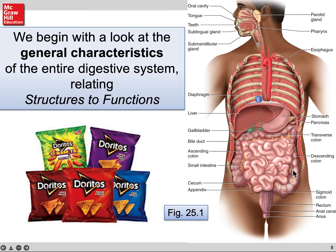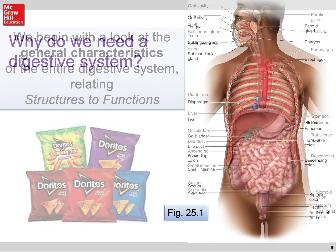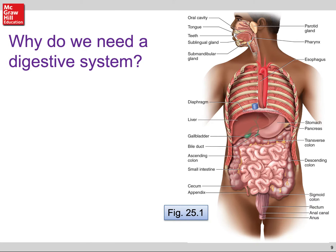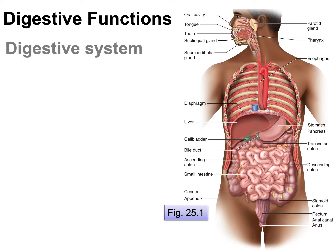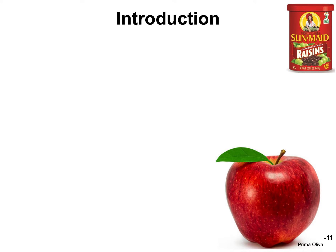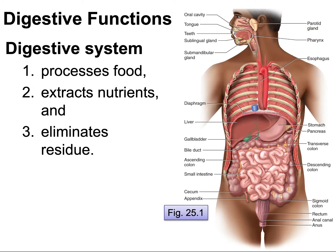Why do we have a digestive system? We've pretty much covered these functions: a digestive system processes food — it breaks it down mechanically and chemically. Then the good part: it extracts the nutrients. In some cases that's simple moisture; in other cases it's vitamins, minerals, and sources of calories. Then there are the undigested parts.